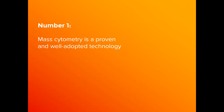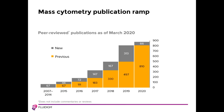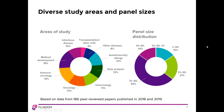Number one: mass cytometry is a proven and well-adopted technology. Since the first CyTOF instrument was sold in 2008, over 900 peer-reviewed papers have been published featuring significant use of mass cytometry or introducing new analysis methods. Research comes from the fields of immuno-oncology, oncology, and basic immunology, but also extends to stem cell biology, neuroscience, infectious disease research, and data analysis approaches.